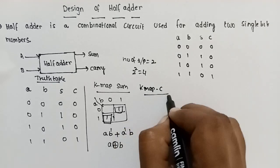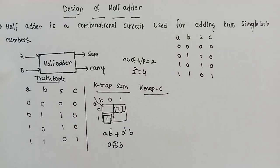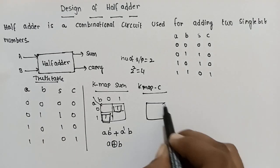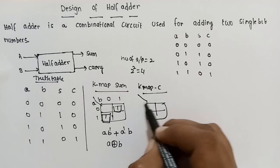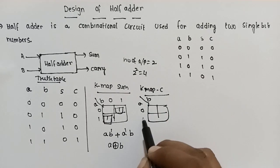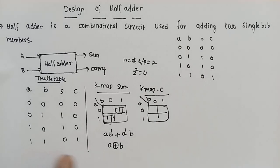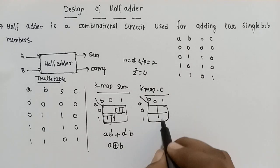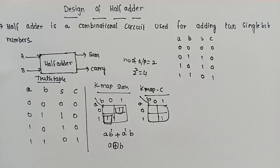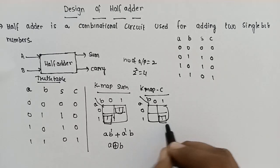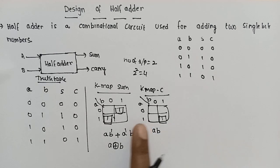Now the K-map for carry, C. Carry also uses a 2-variable K-map with 2 inputs. Placing the values: there is only a single 1 in the combination, so no grouping is possible. The direct result is A·B. So carry equals A AND B.